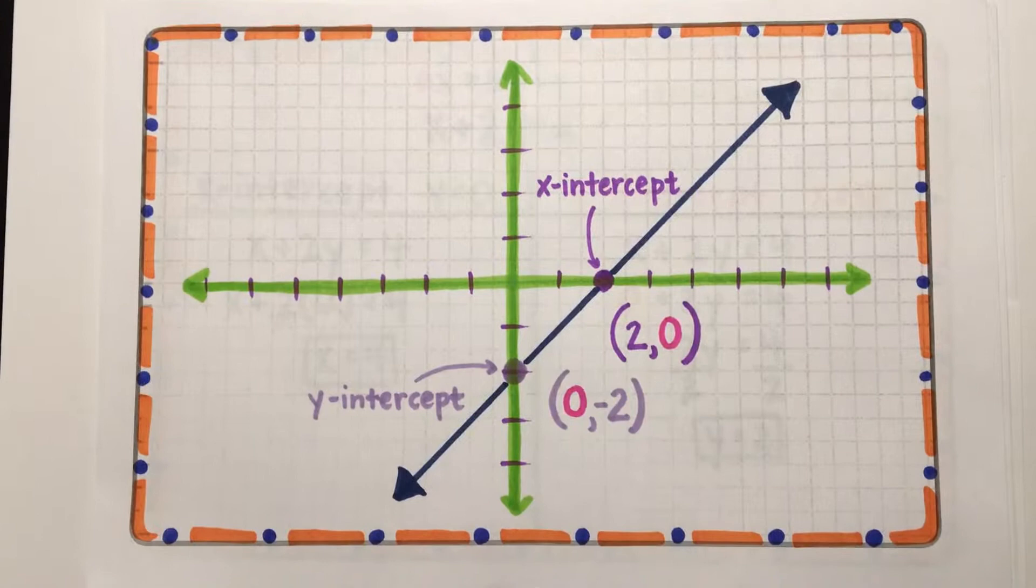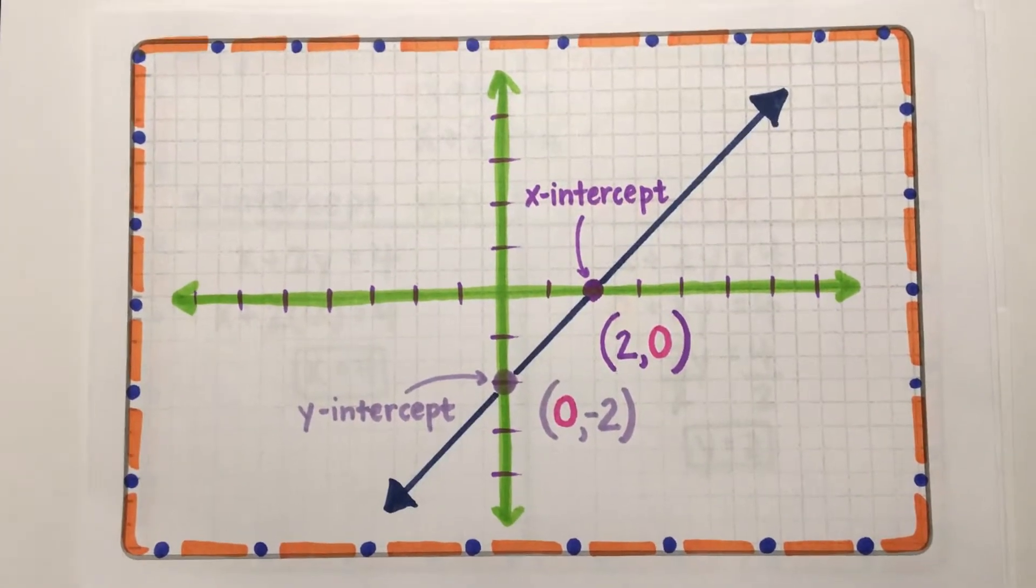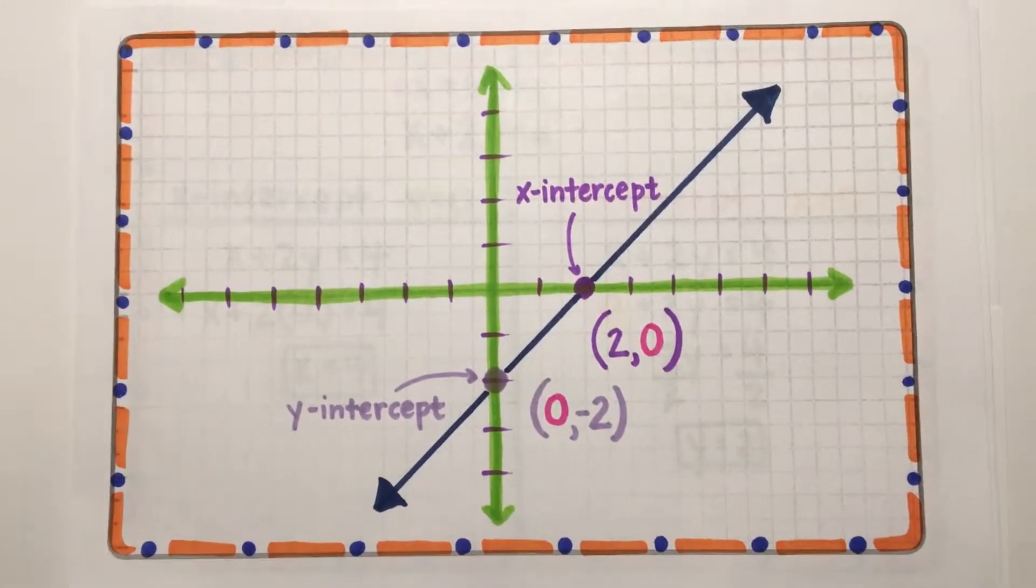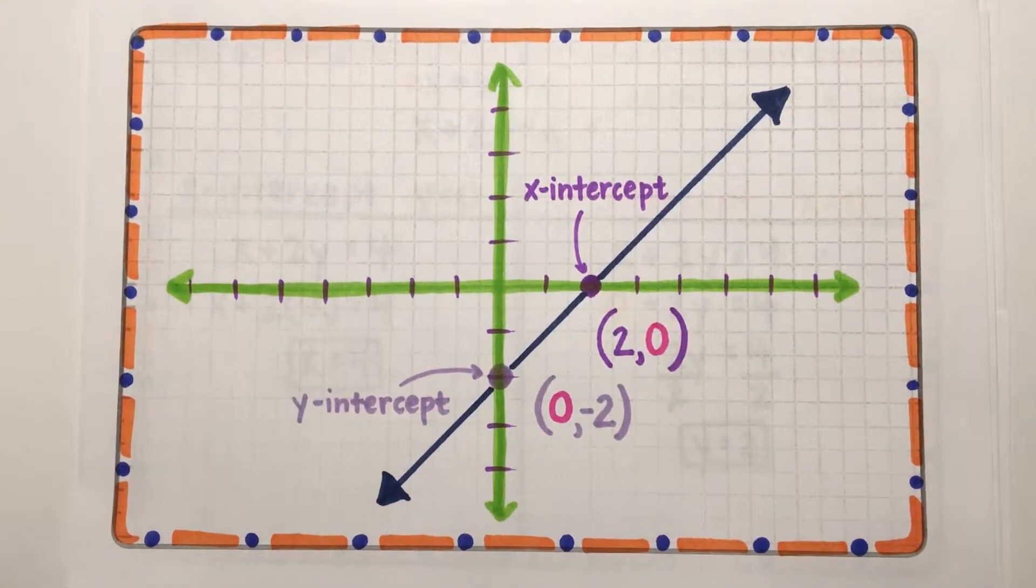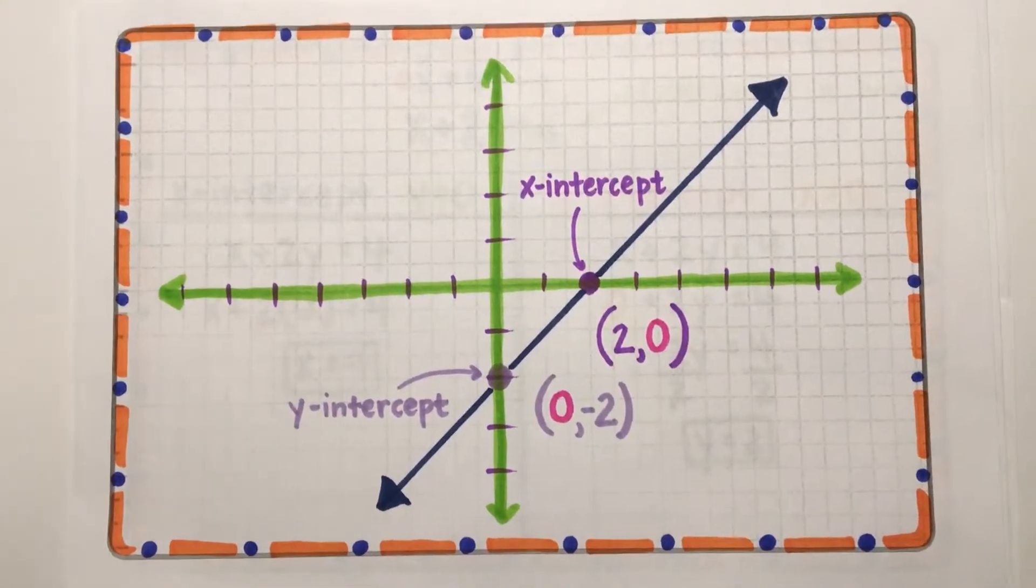But did you notice that a coordinate point on the x-axis has a y-value of 0, and the coordinate point on the y-axis is the opposite? Its x-value is 0. This is always true, thankfully.